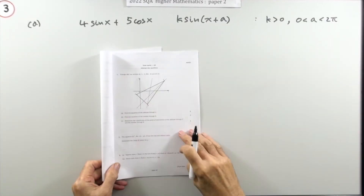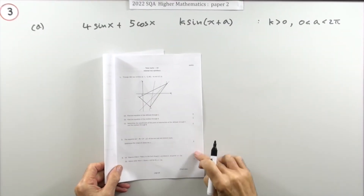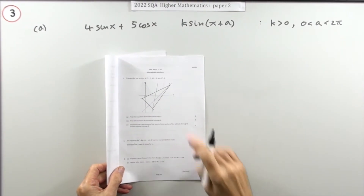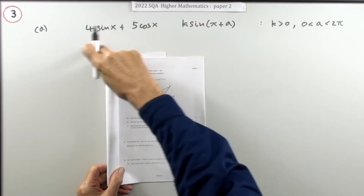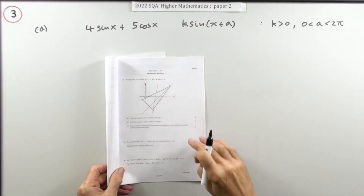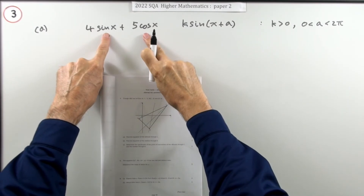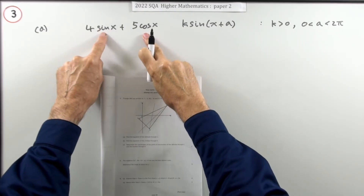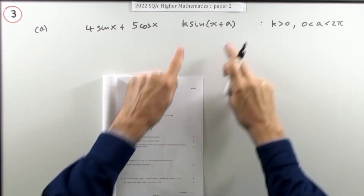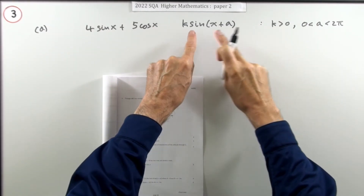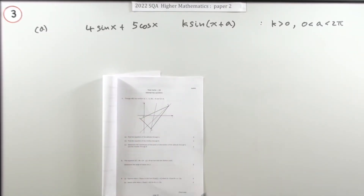Question 3 from the 2022 Higher Maths Paper 2, a 7-mark question. You'll recognise this immediately as the wave equation question — you've got two terms, one's a sine and one's a cosine, but it's the same angle, and you have to write them in the form of a single sine or cosine.